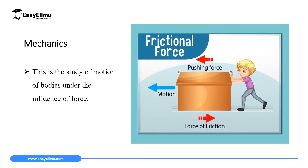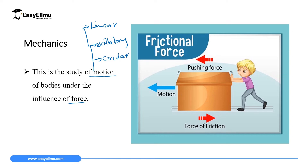Mechanics is the first branch of physics, defined as the study of motion of bodies under the influence of force. In this branch we base our study on three main types of motion: the first is linear motion, which is motion in a straight line; the second is oscillatory motion; and the third is circular motion. We will see how force can cause each of these types of motion.